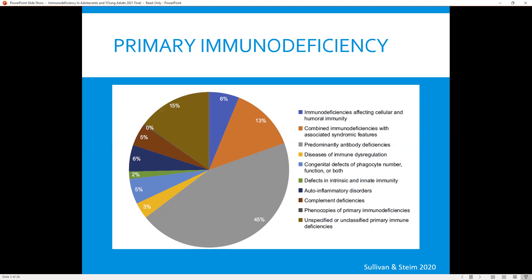The incidence of primary immunodeficiency has increased during the last decade. Using the United States as a population-based cohort, primary immunodeficiency rates have increased from about 2.1 per 100,000 person years in the late 1970s into the early 80s, to now about 10.3 per 100,000 person years in the early 2000s.